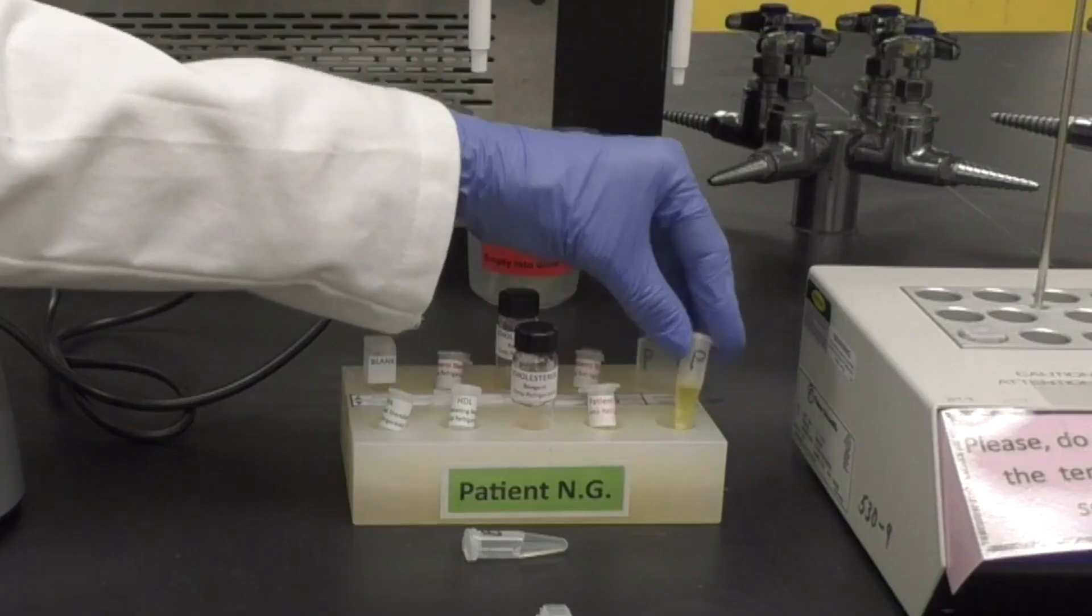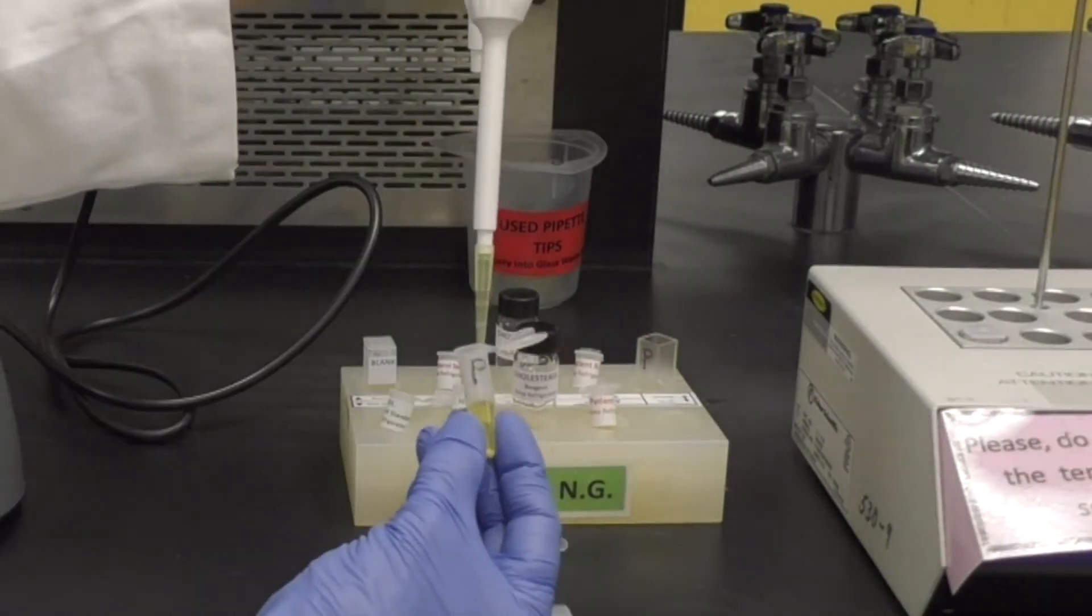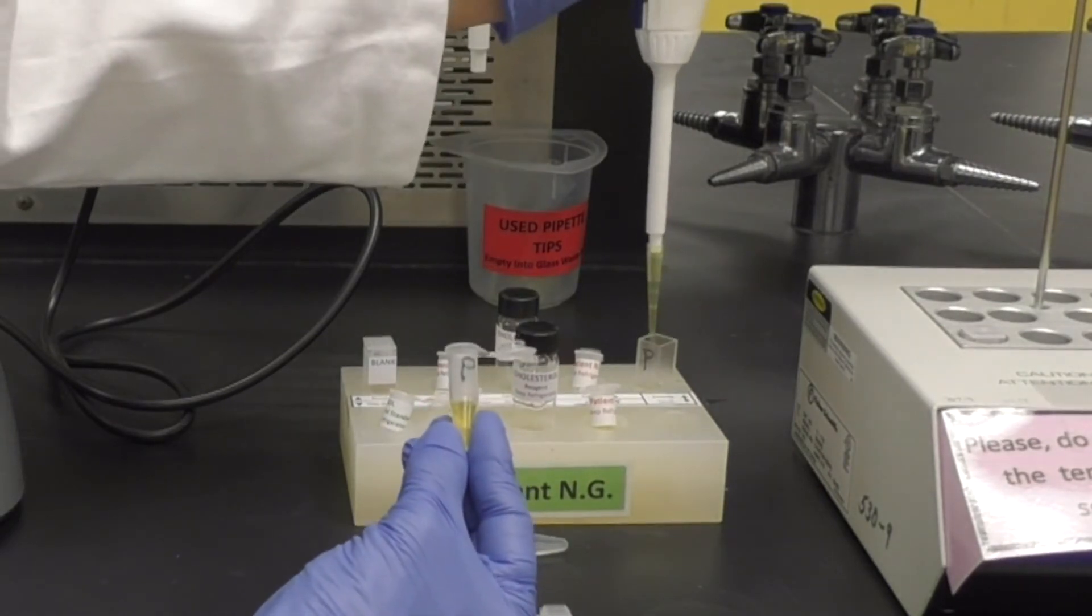After a couple of minutes, add 50 microliters of the light yellow liquid from the patient microfuge tube to the remaining cuvette. Mix and warm for 5 minutes.